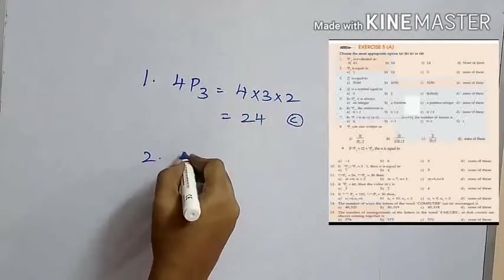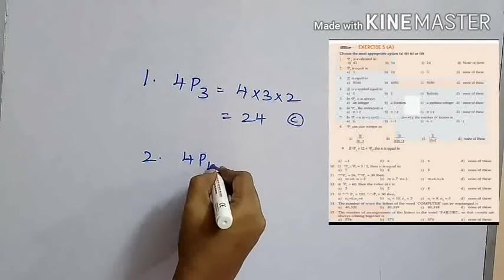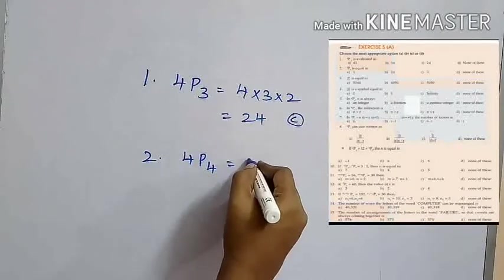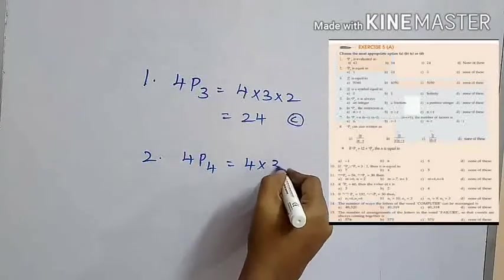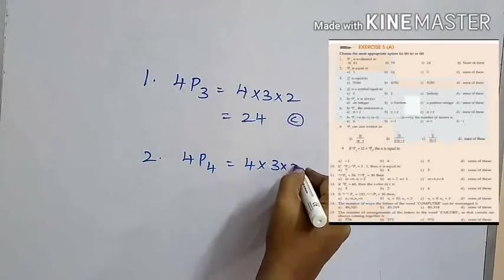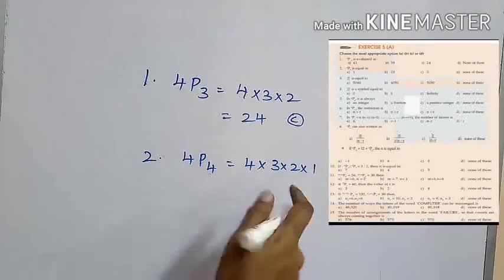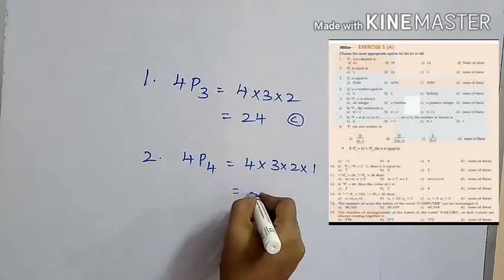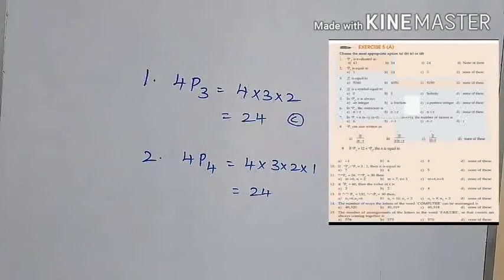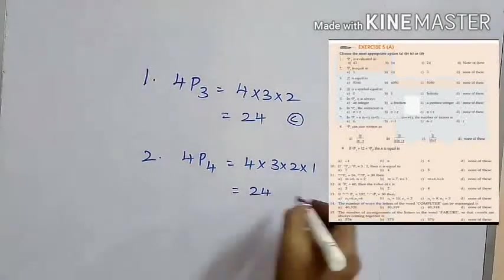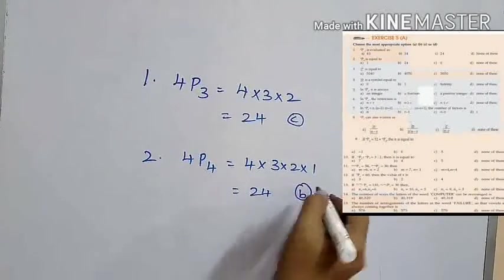The second question is: 4P4 is equal to. Again we have to decrease 4, four times, which is 4 × 3 × 2 × 1, equal to 24. Option B is the answer.